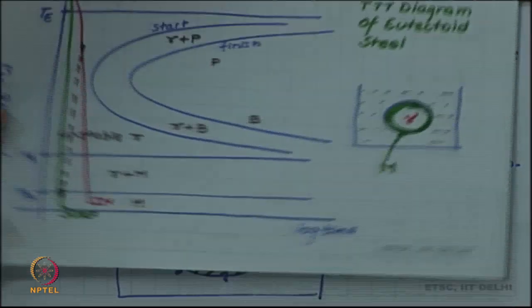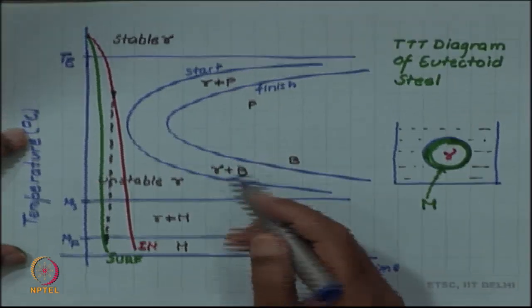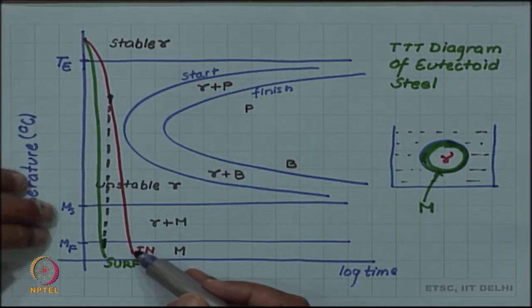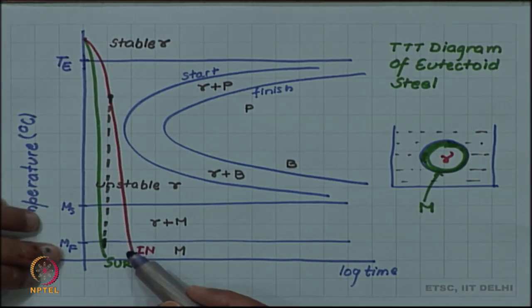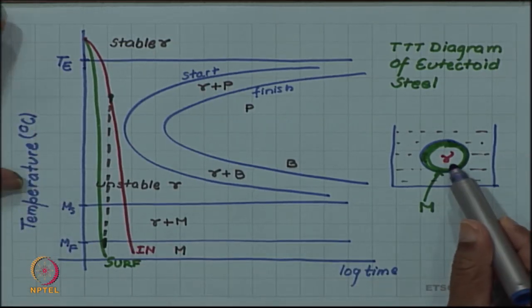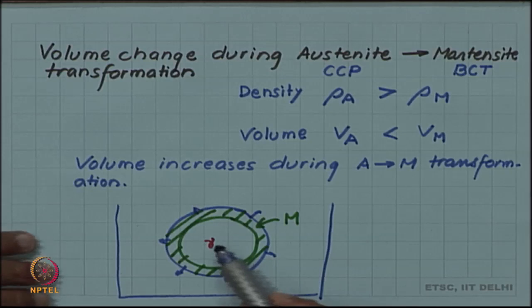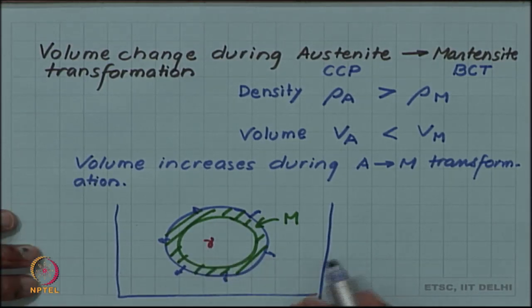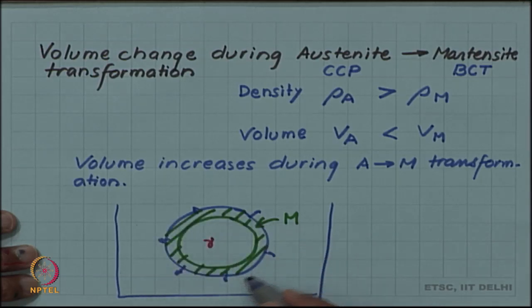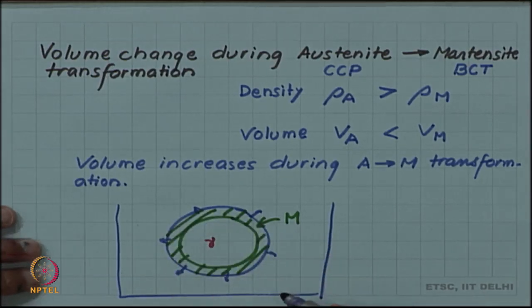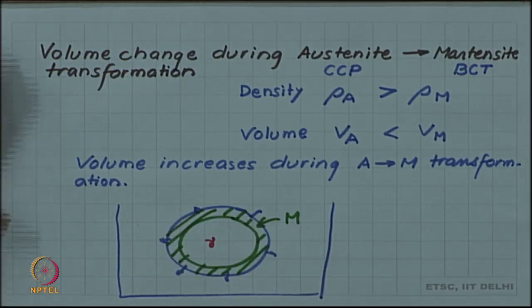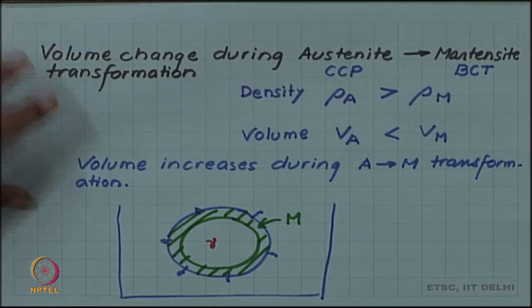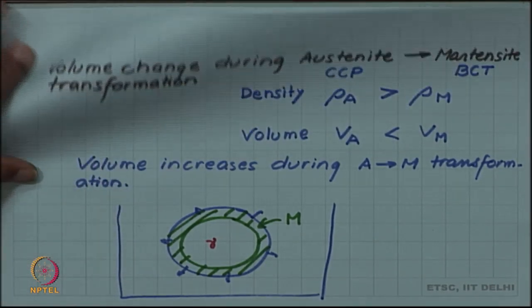But later on when the inside also crosses martensite start and martensite finish and it wants to transform to martensite, now when this gamma will cool this will also like to expand, but then it is inside a hard and brittle martensite casing.